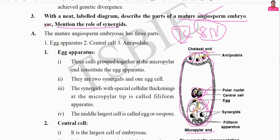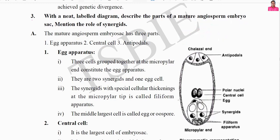The egg apparatus is located towards the micropylar end of the ovule. Here you can see the micropylar end — towards it there is the egg apparatus. Three cells are present here: two of these cells are called synergids, and the center one is the egg cell. The three cells grouped together at the micropylar end constitute the egg apparatus. There are two synergids and one egg cell.